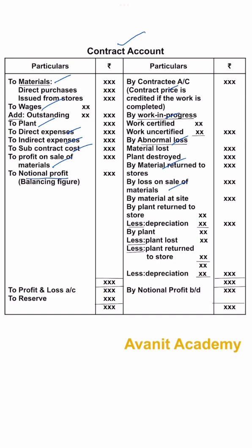If you get the difference amount on the debit side, you will get notional profit. If you get the difference amount on the credit side, you will get notional loss. This notional profit is distributed between the profit and loss account and reserves.